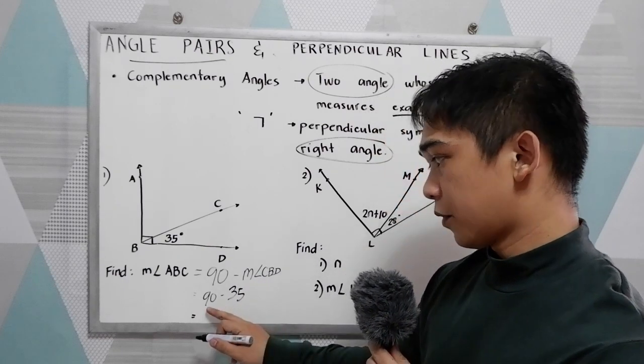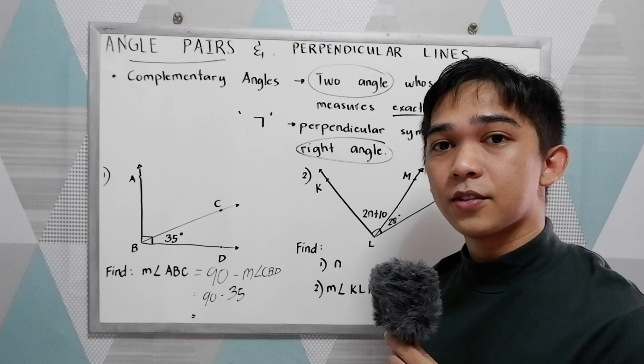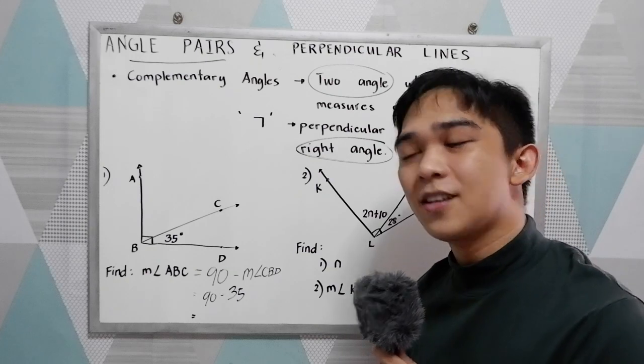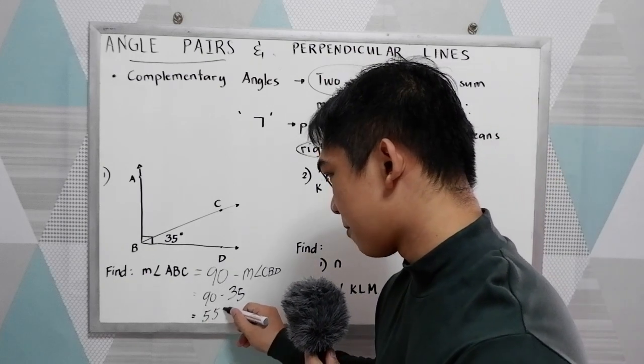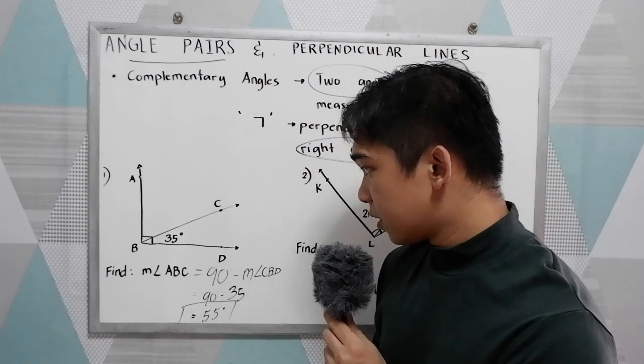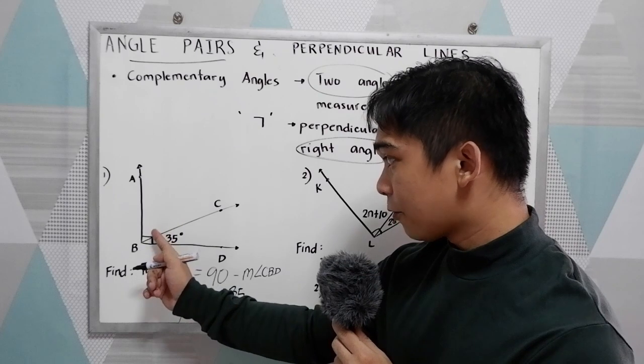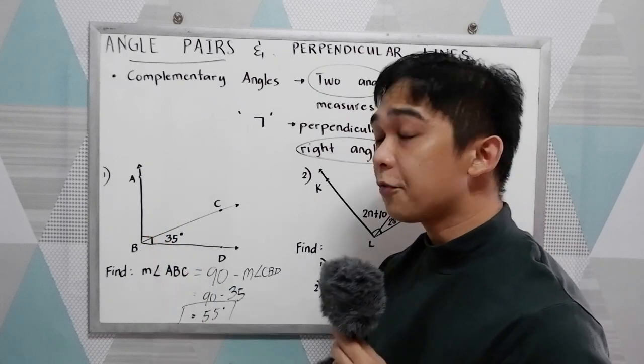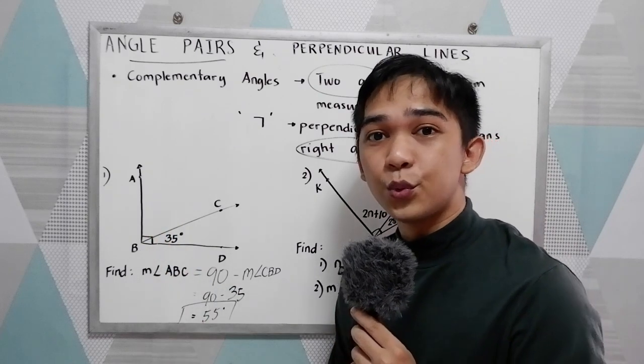Now, 90 minus 35, that is 55 degrees. If you want to check your answer, just substitute. 55 plus 35, that is equal to 90.